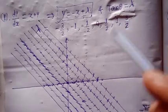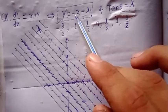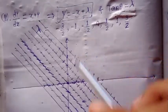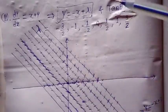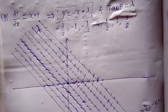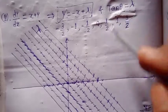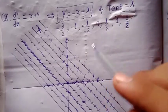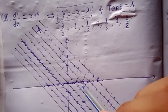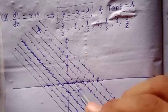For lambda equal to 1, the isocline is y equal to minus x plus 1, which is also parallel to the previous lines. For this, the line segments will be inclined at an angle of 45 degrees with the positive x-axis.